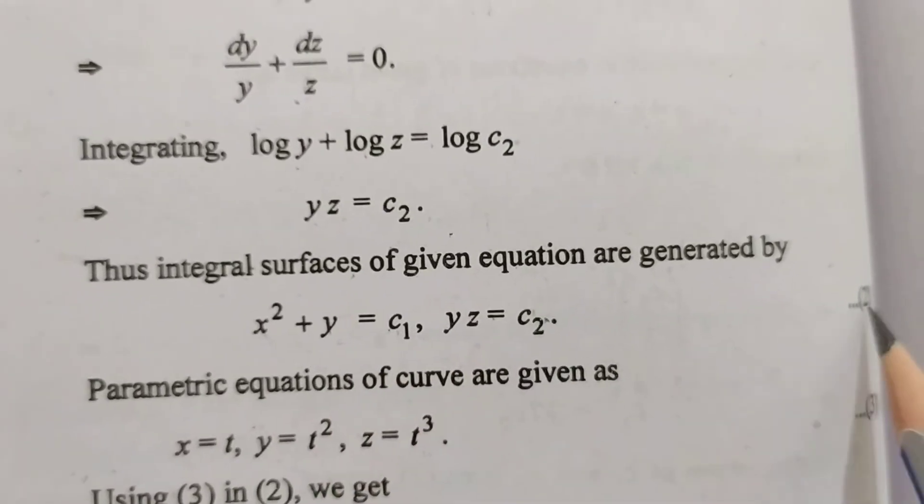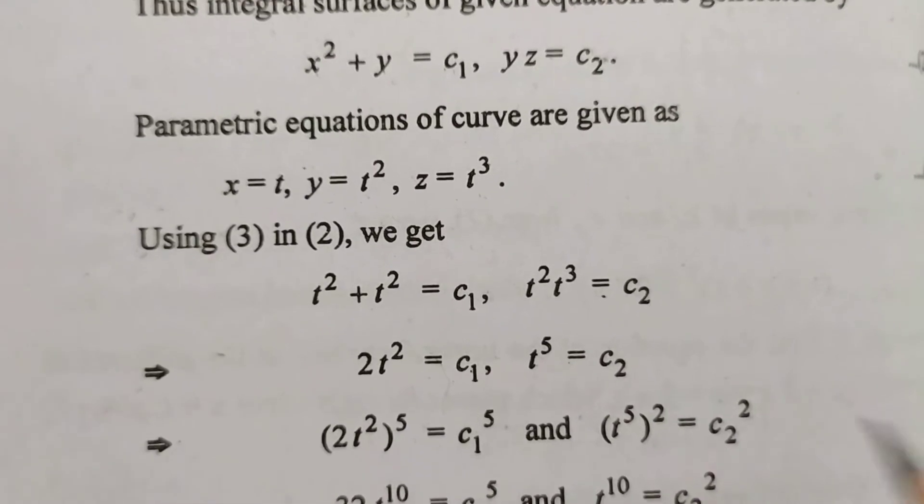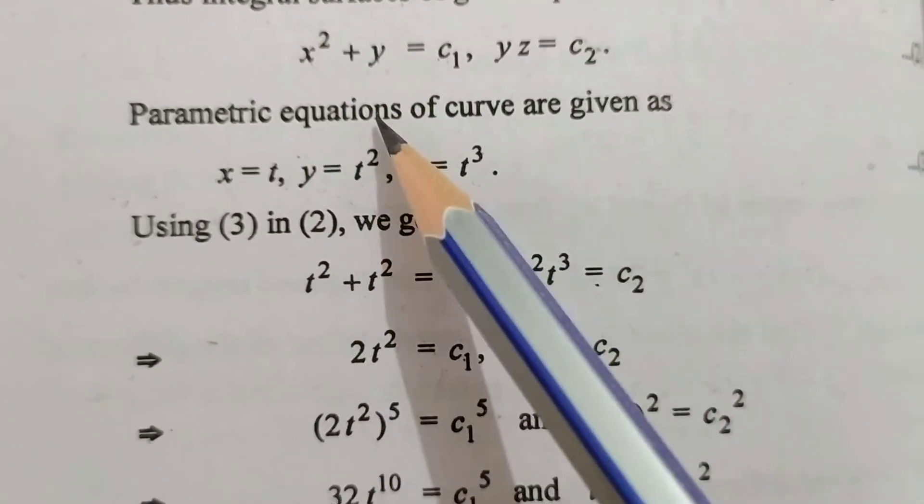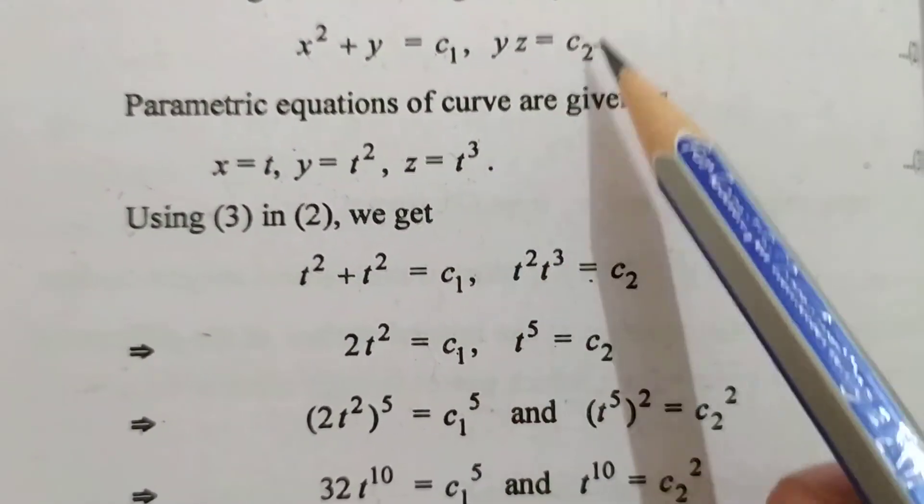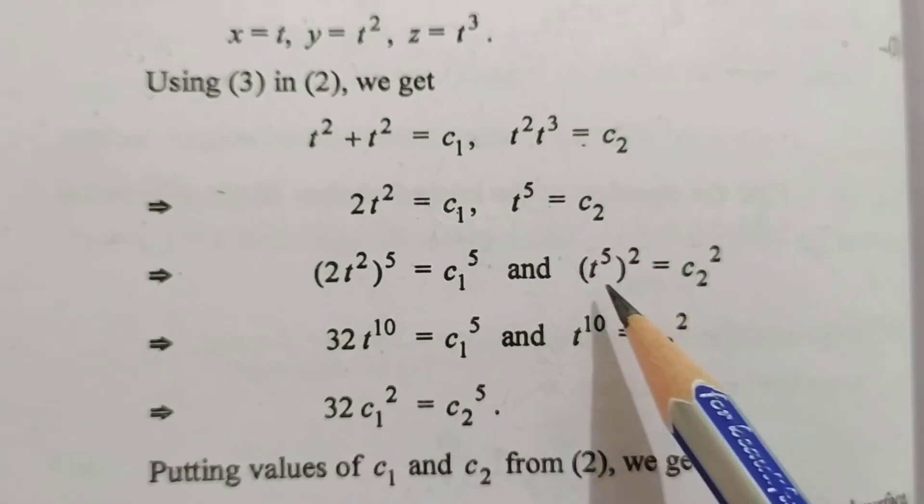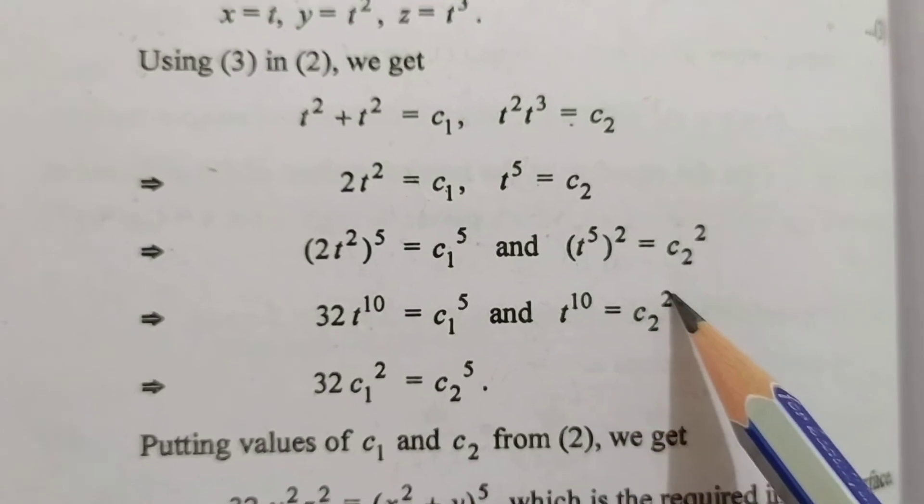Isko humne equation 2 mein put kar diya. x ki value kya hai humari t? To t square plus t square is equal to c1. t square into t cube is equal to c2. t ki power 5 is equal to c2. Dono side humne square kar di to t ki power 10, c2 square.